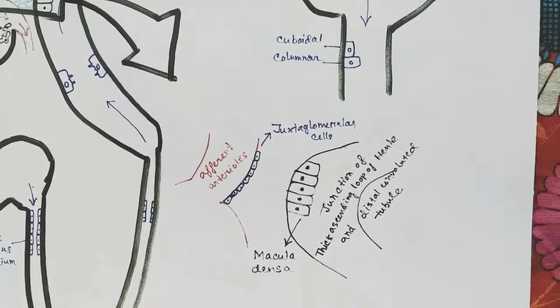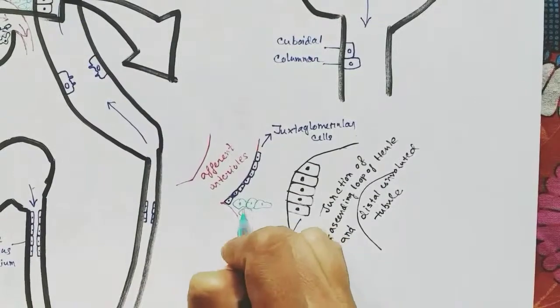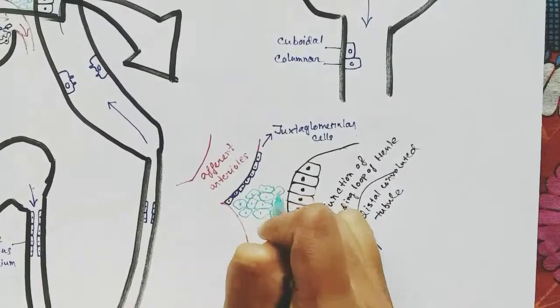The third cell of the juxtaglomerular apparatus is the mesangeal cells, present at this region.